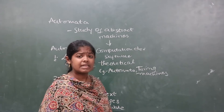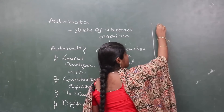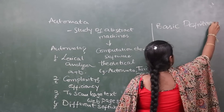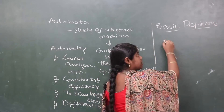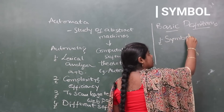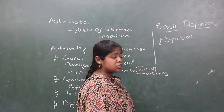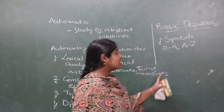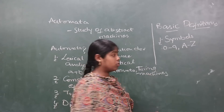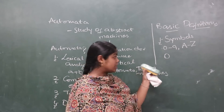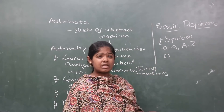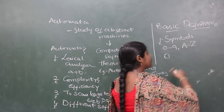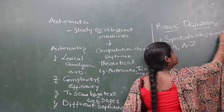Next, there are some basic definitions and terms to know. The first and major one is symbol. A symbol is an abstract entity which doesn't have any particular definition. For example, if I simply say '0', it doesn't define whether it is a string or something else — it has no particular definition on its own. It is simply an abstract entity.